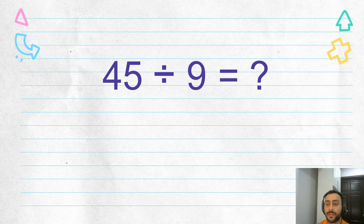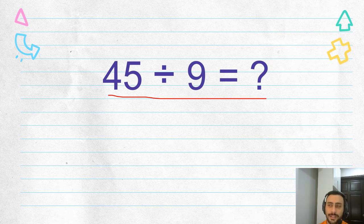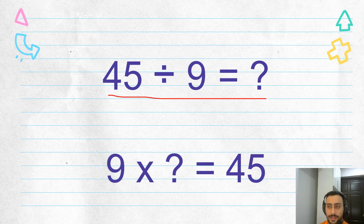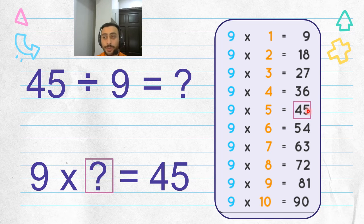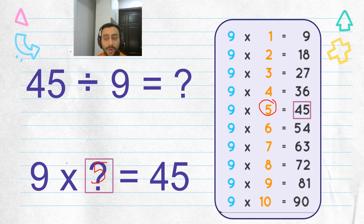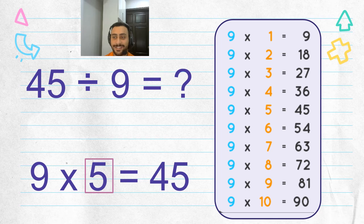Now let's look at this one: forty-five divided by nine equals — I cannot think of the answer. Let's do the same way: nine times what equals forty-five? Nine times one — nine, nine times two — eighteen, nine times three — twenty-seven, nine times four — thirty-six, nine times five — forty-five. I found it! So forty-five divided by nine equals five.